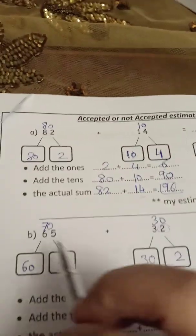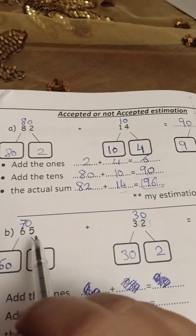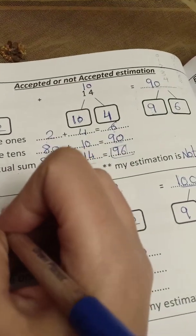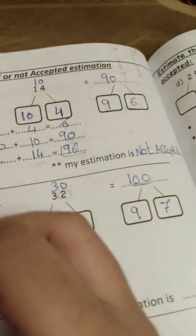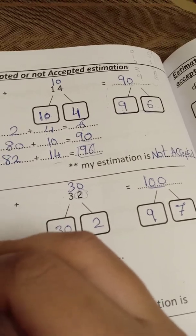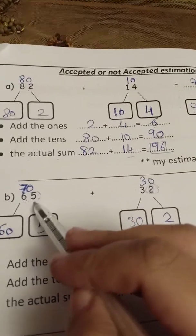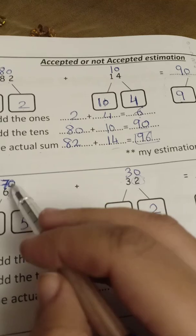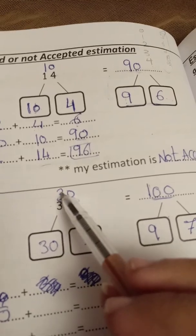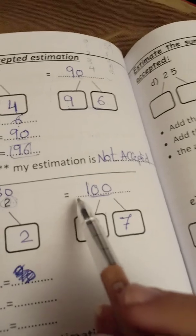Another example: 65 plus 32. The estimation number for 65 — the 5 is strong, so we push up, making it 70. For 32, the 2 is weak, so it stays the same, making it 30. So 70 plus 30 gives the estimation answer of 100.